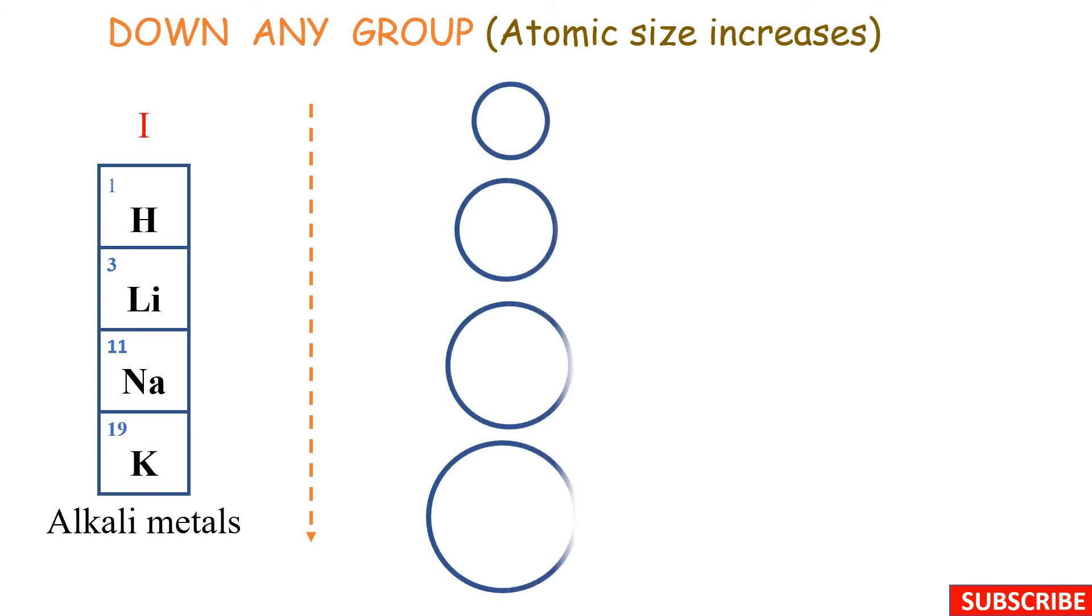Now, when you look at the periodic table, if we move down a given group, down any group, we tend to see an increase in atomic size, also known as atomic radius. Taking a look at group 1, it means that the atom of lithium will be larger in size compared to that of hydrogen. And among these four, potassium will have the largest atomic size because as we move down the group, we tend to increase the number of energy levels.